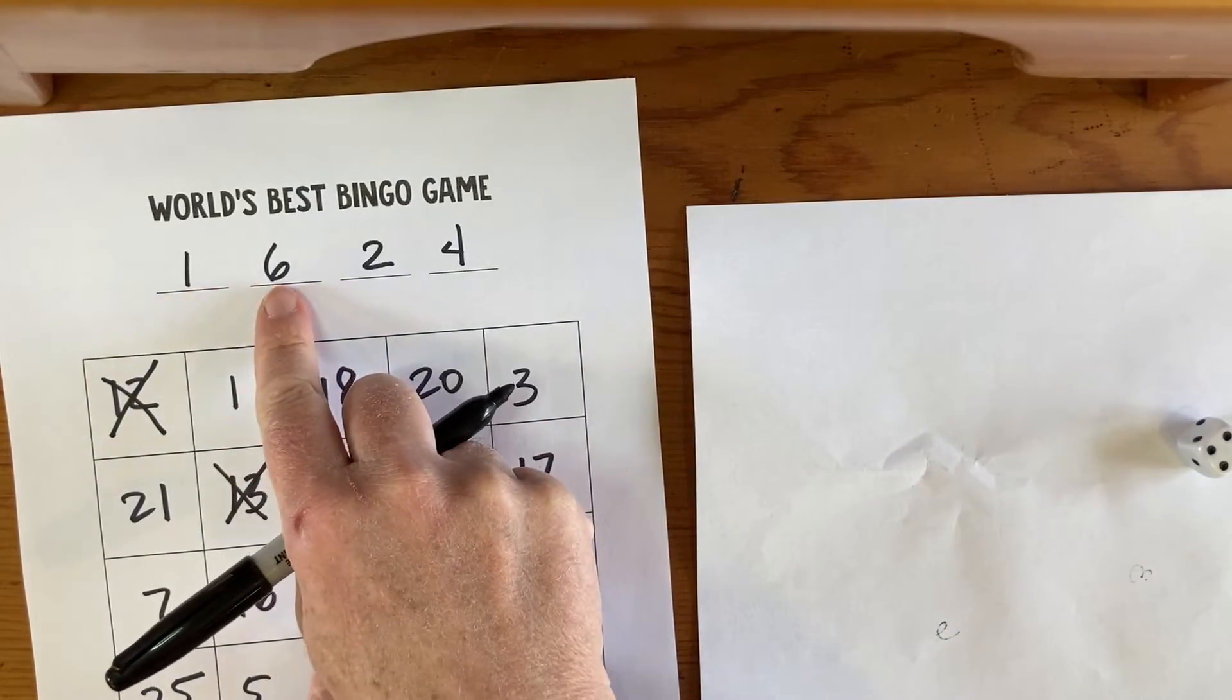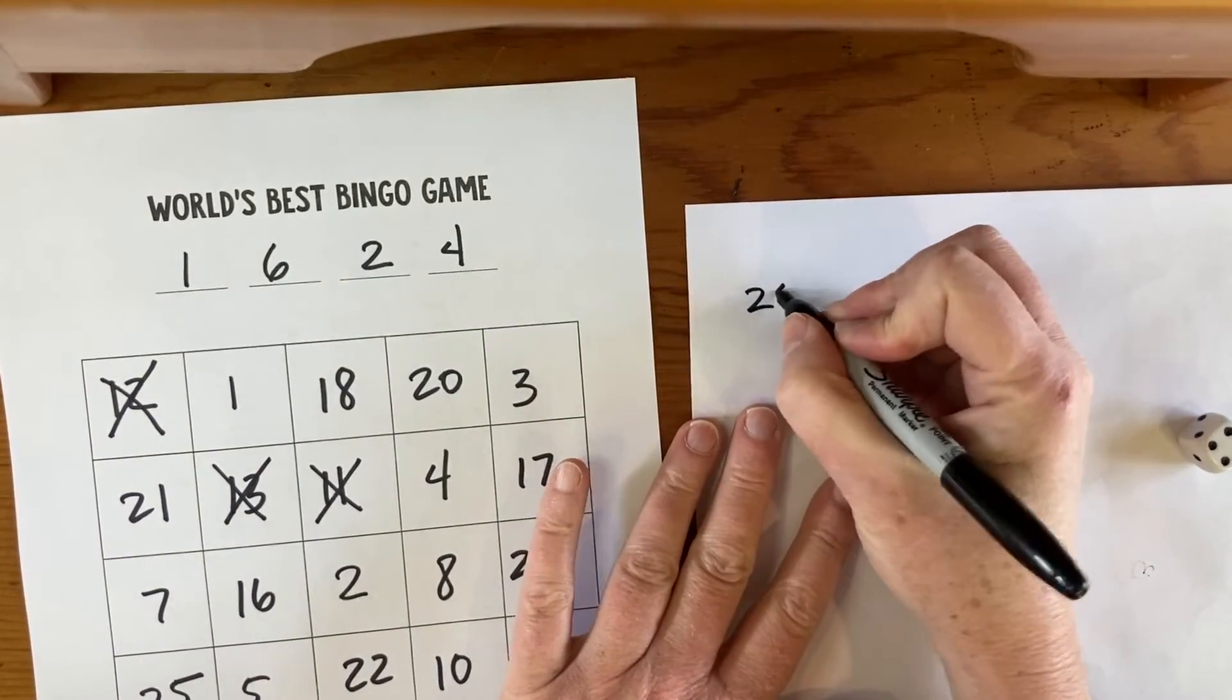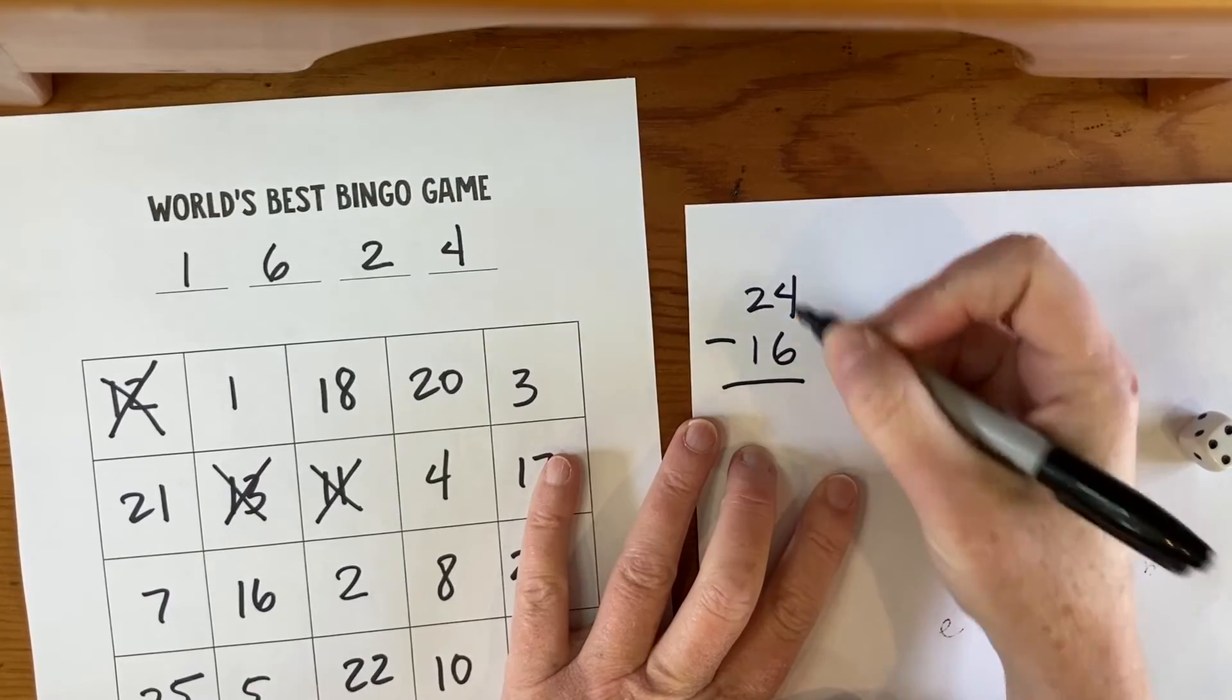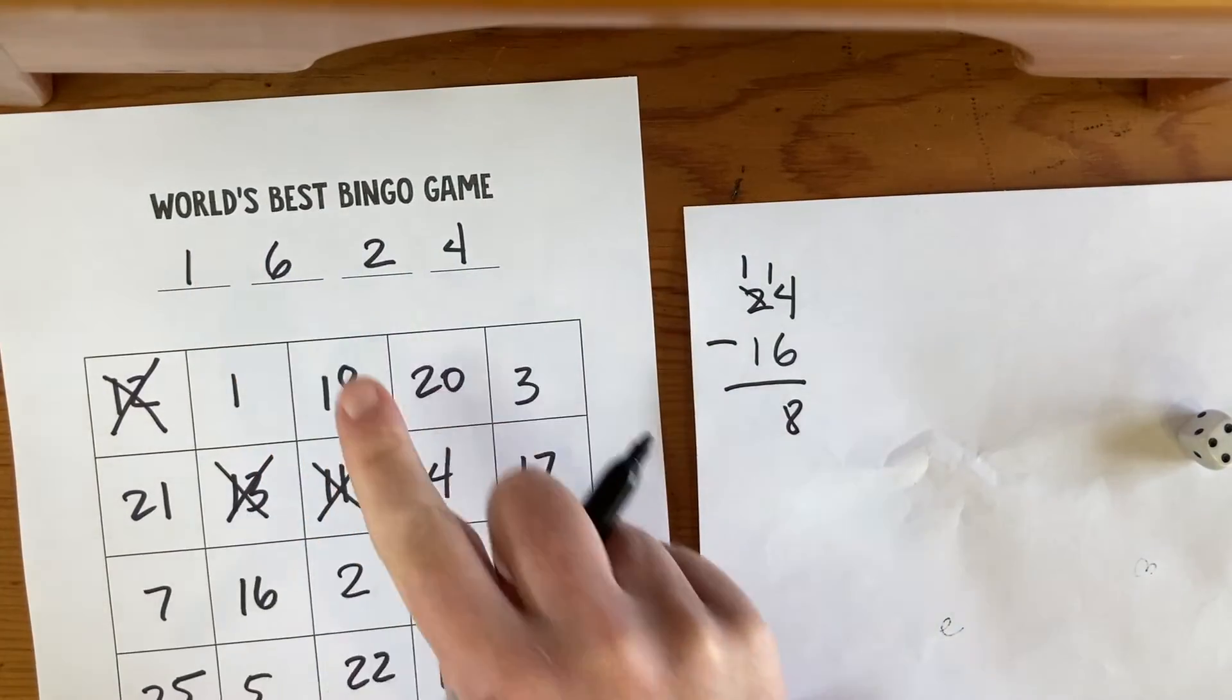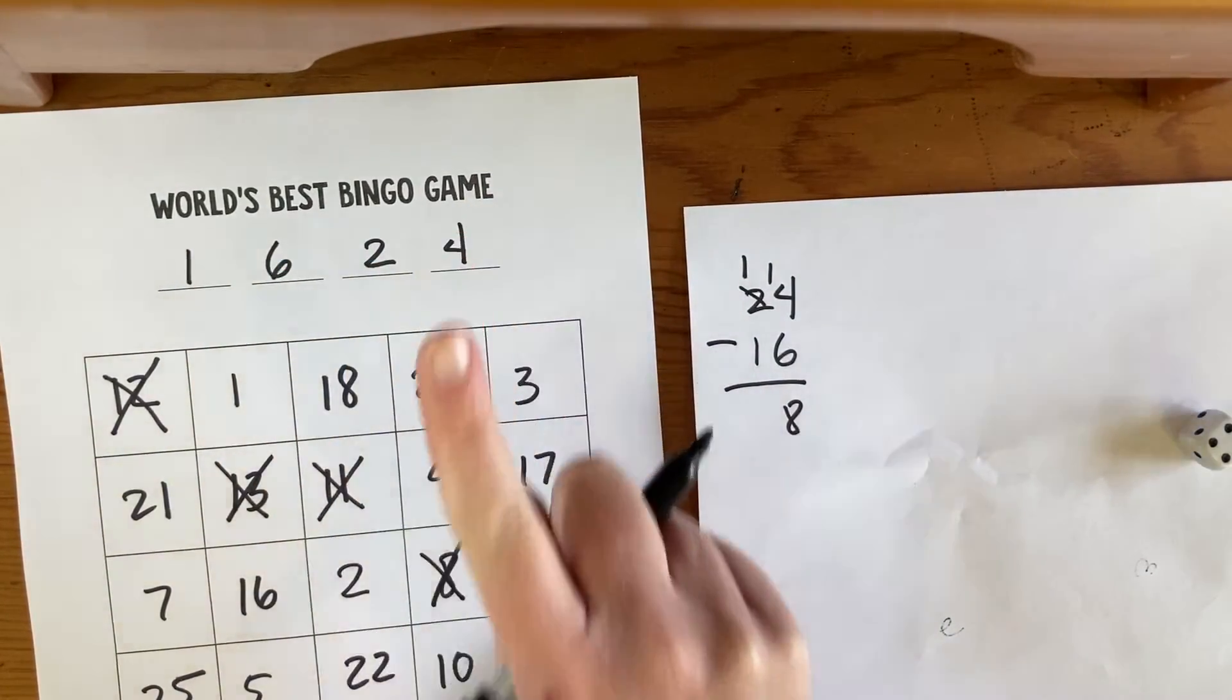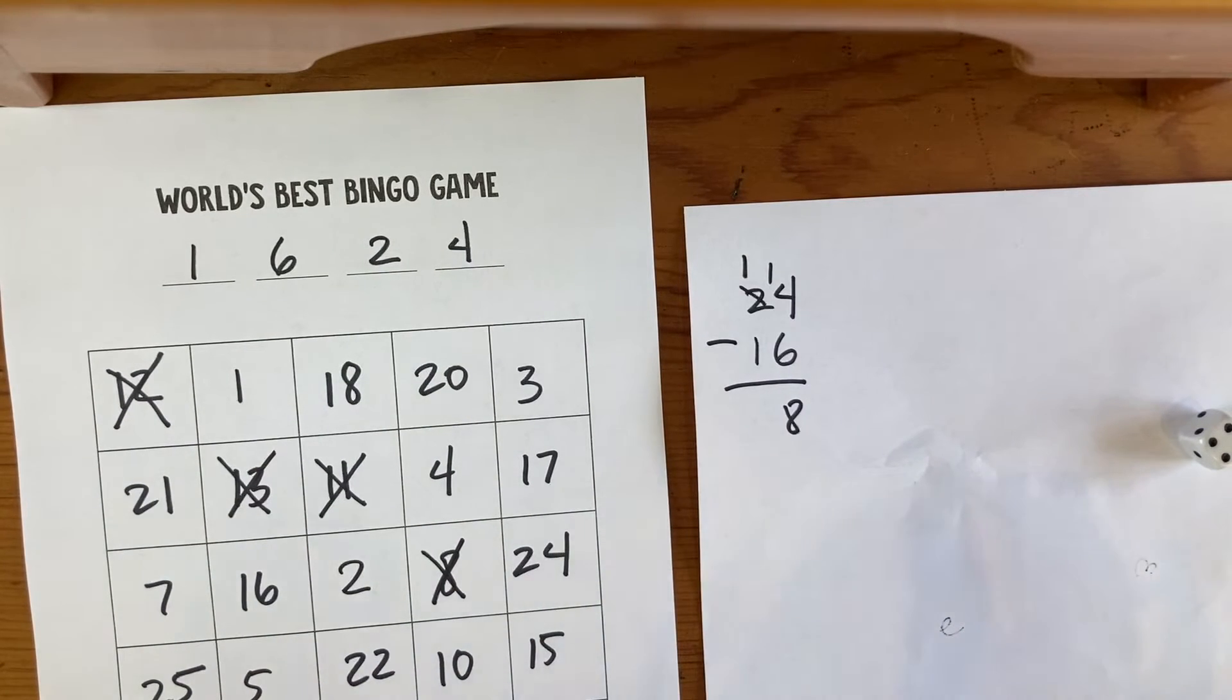You can also put digits together, so I could do a 24 minus 16, and we would have 8. The only rule really is that you have to use every one of these digits and you can only use them once, but you can use any math at all.